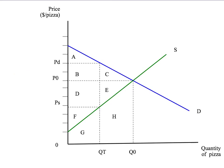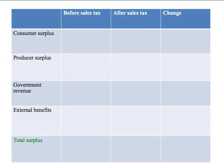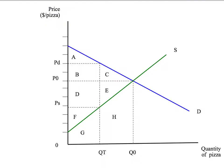Following the step-by-step approach to welfare economics that we introduced in the last presentation, we put in all the construction lines that we think might be relevant and label all the areas — area F, area H, and so on. We have our table which is going to have consumer surplus, producer surplus, government revenue, external benefits, and total surplus — before the sales tax, after the sales tax, and any changes. So let's get started.